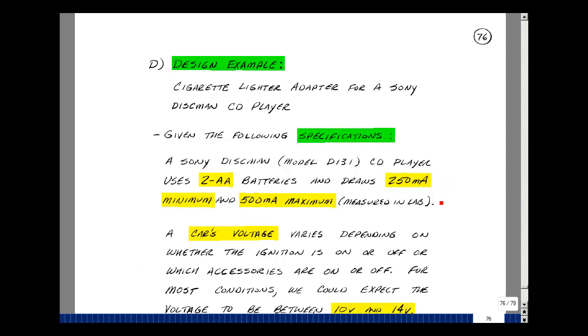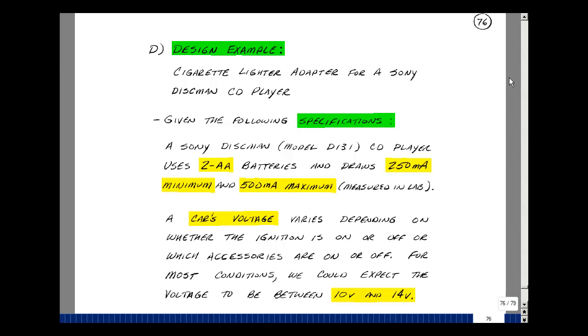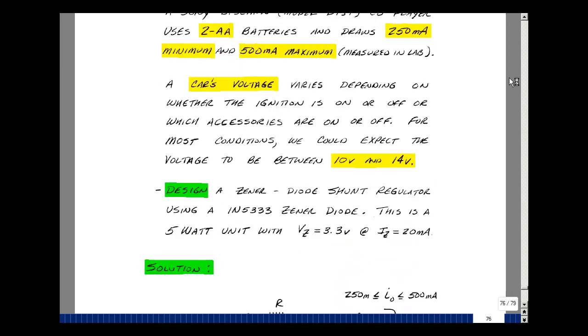And then when it was seeking a song, speeding up the motor, the current peaked at about half an amp. Plugging this into a car, the voltage in the car varies depending on what accessories are on or off and whether the car itself is on or off. The most you'd probably see in a car when it's running is about 14 volts, and if the battery were pretty much run down, about 10 volts. I wanted this CD player to work under all conditions.